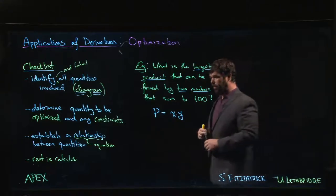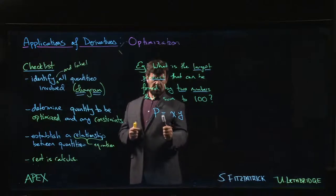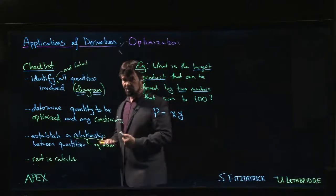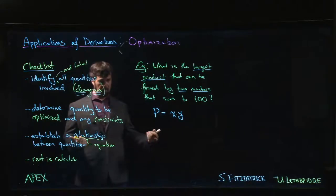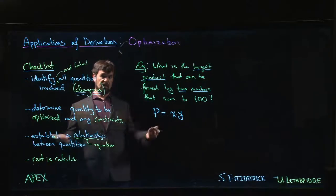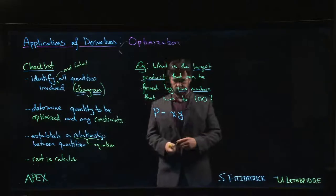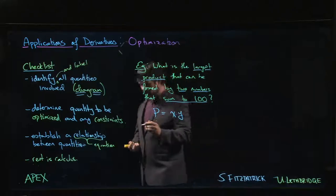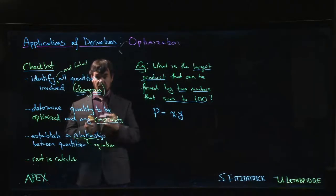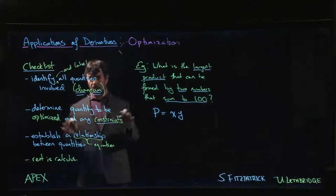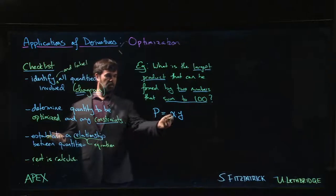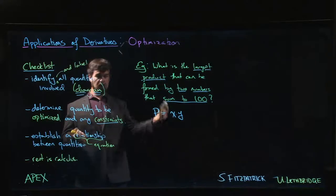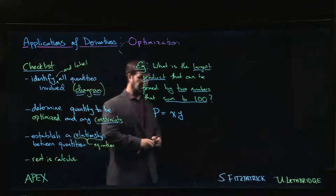P is the quantity to be optimized — our dependent variable — and it depends on two independent variables, x and y. We've only looked at functions of a single variable so far, so we can't yet just take the derivative, set it to zero, and check endpoints. But there's one other piece of information: the numbers must sum to 100. This is called a constraint. Constraints let us eliminate one variable by expressing one in terms of the other.